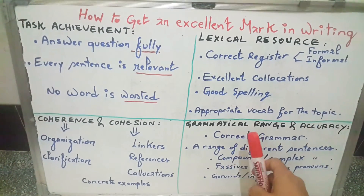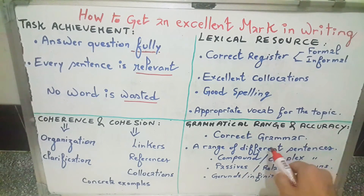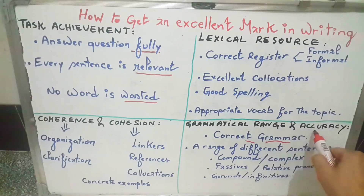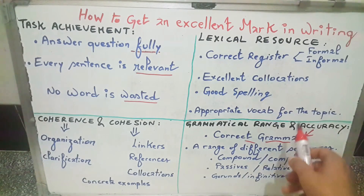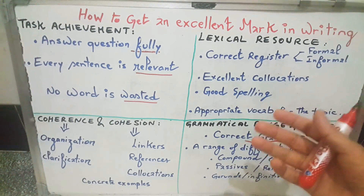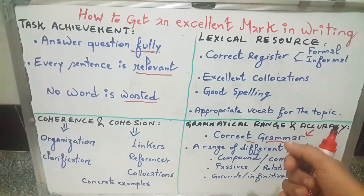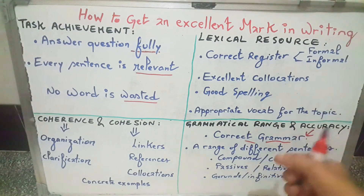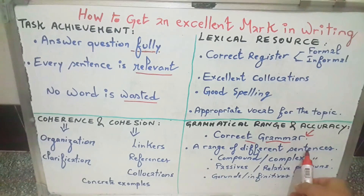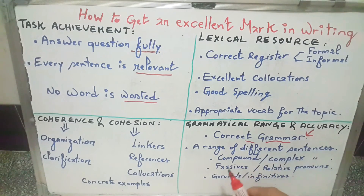Another feature is grammatical range and accuracy. Accuracy simply means correct grammar — try to keep grammatical mistakes to a minimum. You have to become more aware that using a range of different sentence types pays dividends, so try to use compound and complex sentences.